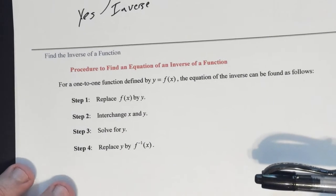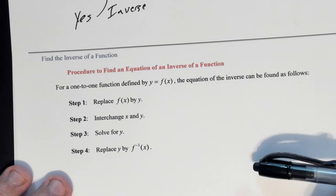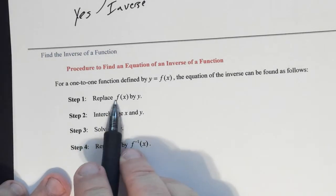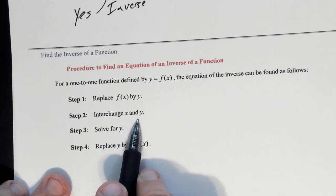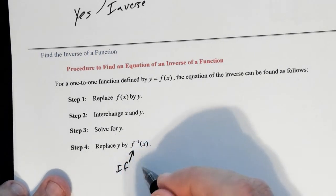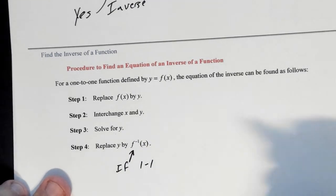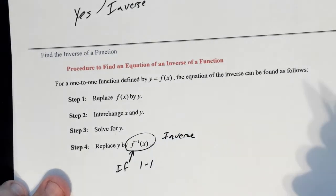Now let's look at how to find the inverse of a function — again, from Algebra 2. The steps are: first, replace f(x) with y. Then, switch all x's and y's. Next, solve for y. If we're dealing with a one-to-one function, replace y with the inverse notation f⁻¹(x).